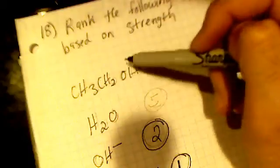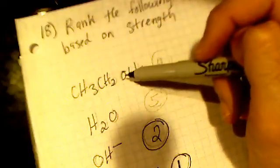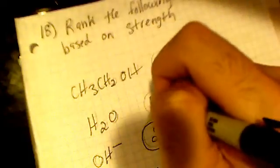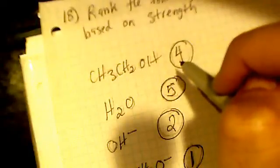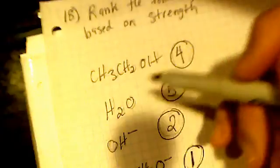So then looking at the molecules that are neutral, water is more acidic than ethanol. Since water is more acidic, it's going to be a less strong nucleophile than ethanol, because water is more likely to give a hydrogen than to take one. Ethanol is a little bit more likely to take a hydrogen than to give one compared to water.